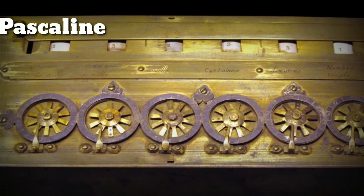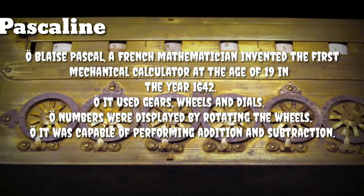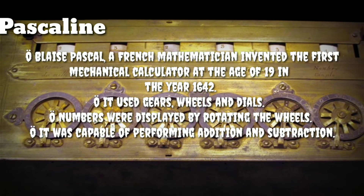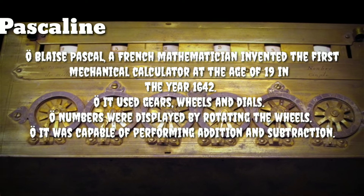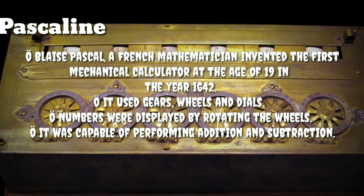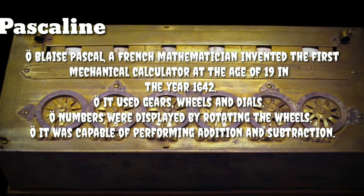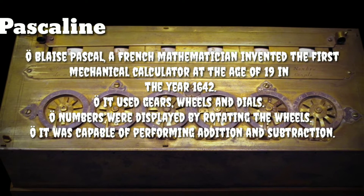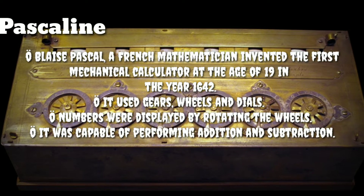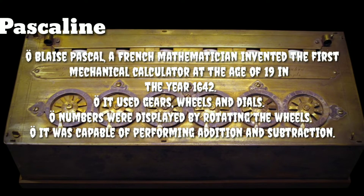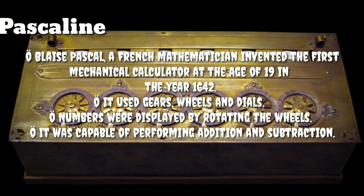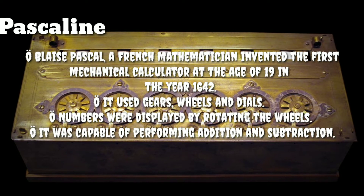Now next is Pascaline. Blaise Pascal, a French mathematician, invented the first mechanical calculator at the age of 19 in the year 1642. It used gears, wheels, and dials. Numbers were displayed by rotating the wheels. It was capable of performing addition and subtraction only.